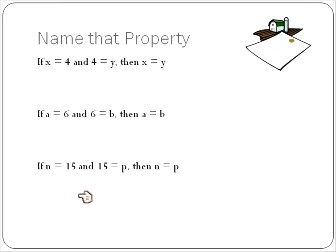They're both equal to each other. N equals 15. 15 equals p. Then n is equal to p. This is the transitive property.